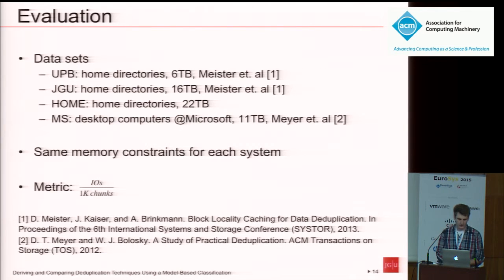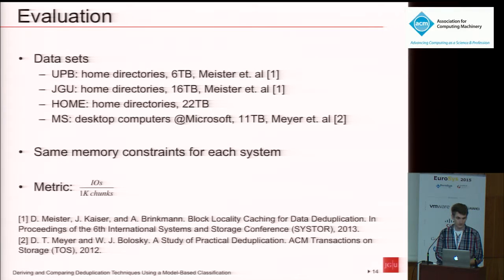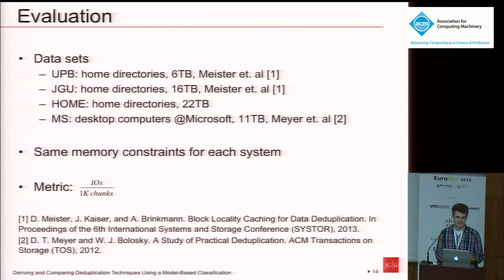We performed this evaluation based on four datasets. The first three are weekly backups from two different universities, where the backup data consists of home directories. The last one consists of backups from desktop computers from Microsoft. For each system, we gave the same amount of main memory. Our metric was to count the number of IOs each approach uses to identify chunks. Since the datasets have different sizes, we normalized by computing the number of IOs per 1000 chunks.